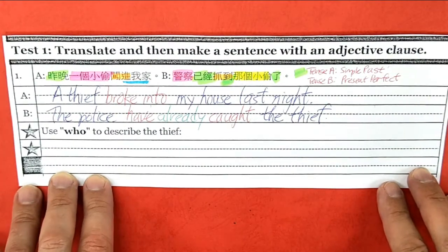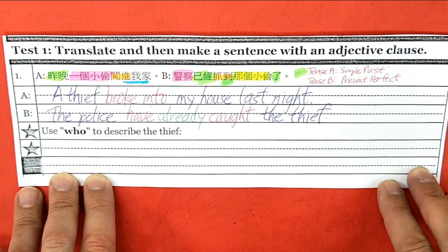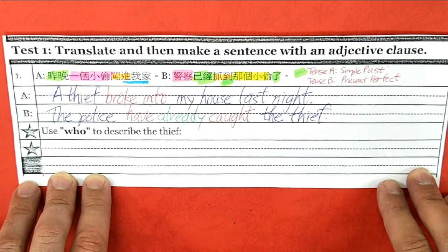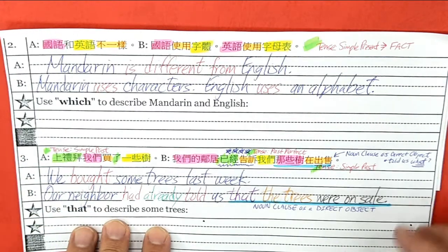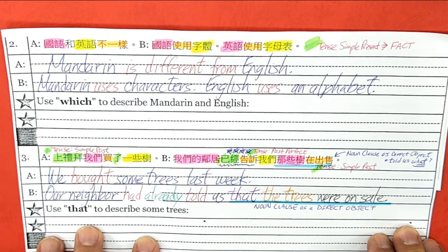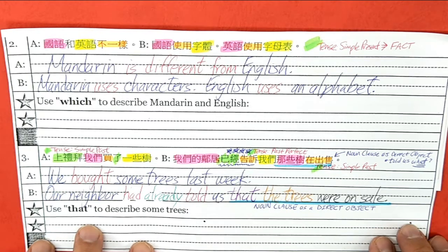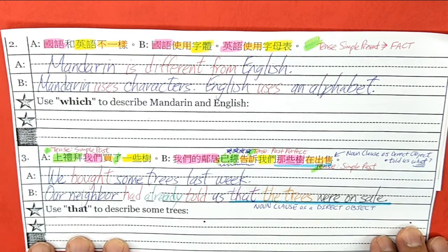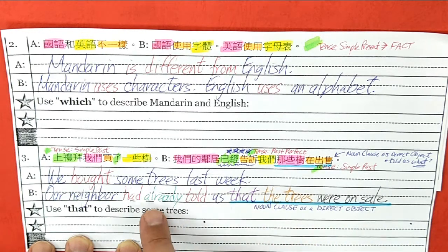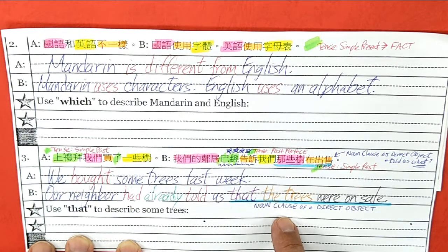Number one. A: A thief broke into my house last night. B: The police have already caught the thief. Number two. A: Mandarin is different from English. B: Mandarin uses characters. English uses an alphabet. Three. A: We bought some trees last week. B: Our neighbor had already told us that the trees were on sale. Remember, 'that the trees were on sale' is a noun clause — neighbor told us what, that's the direct object.